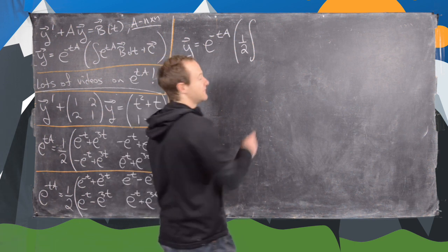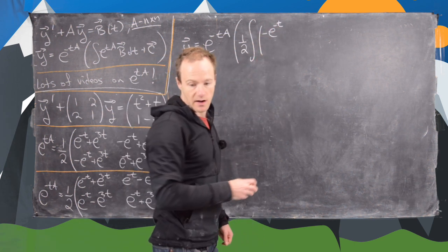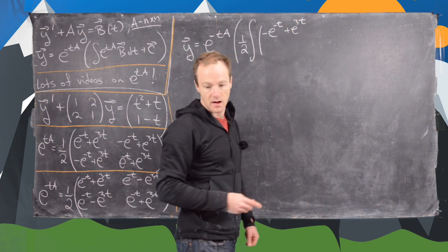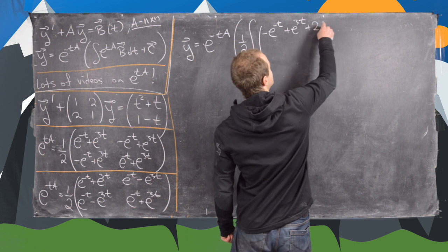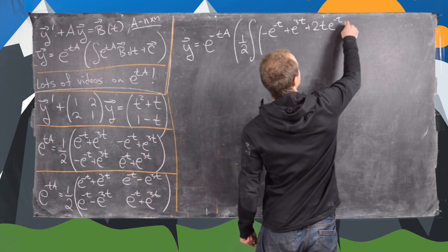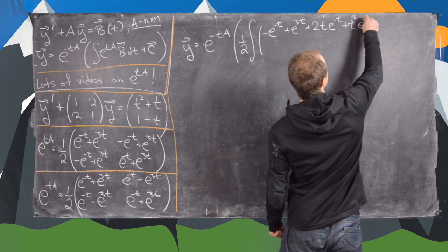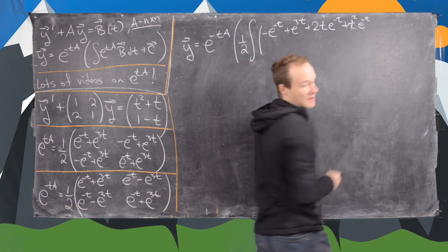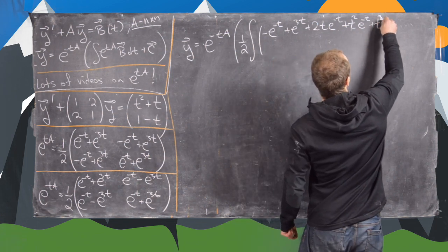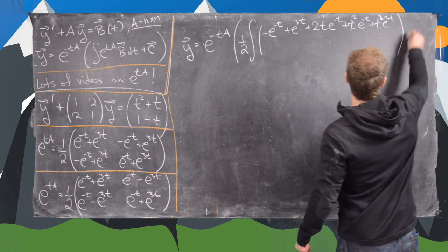You can bring a half out of the whole thing, and you get a vector. The top entry is: minus e to the minus t plus e to the 3t, plus 2t times e to the minus t, plus t squared times e to the minus t, plus t squared times e to the 3t.